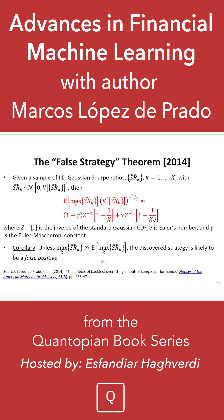There is a way of addressing this — several ways. But one of them is that you want to keep track of the number of independent backtests that you have conducted. This is the variable k here. And there are statistical ways of estimating that number. The second one is: what is the variance across the Sharpe ratios that you have estimated?